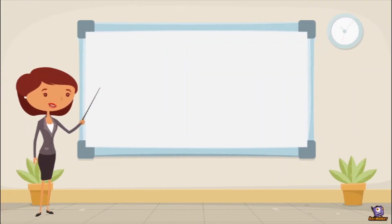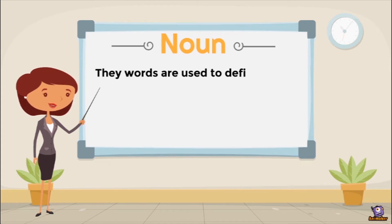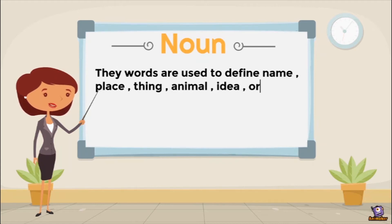Let's start with noun. What is a noun? The words that are used to define a name, place, thing, animal, idea, or events are known as nouns. Simply put, noun woh hote hain jo kisi naam ko, jagah ko, wastu ko, animal ko, kisi idea ko, ya kisi event ko represent karte hain. They are known as nouns.